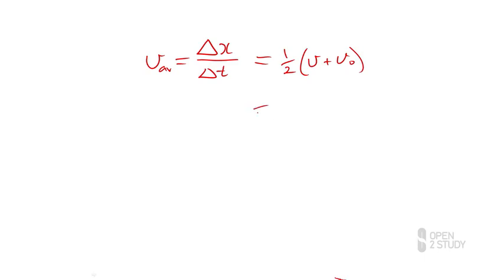Now I already know how to write down my final velocity from the equation of motion we just came up with a little bit earlier. This is going to be v₀ plus at. So this velocity becomes v₀ plus at.